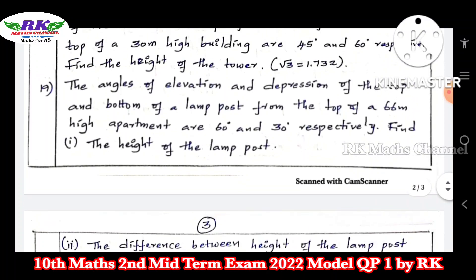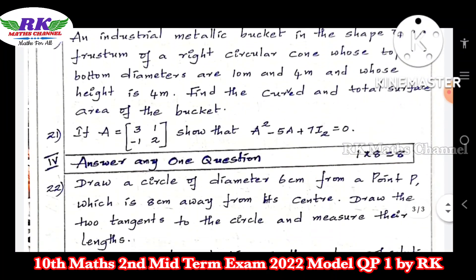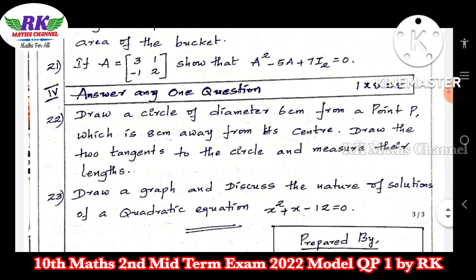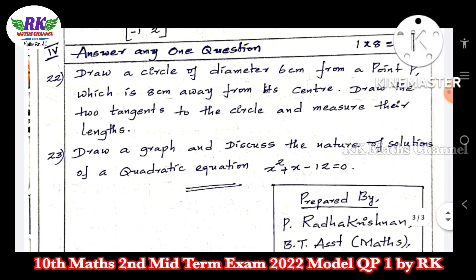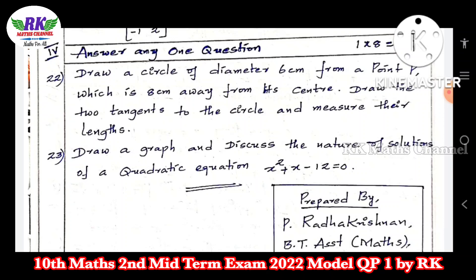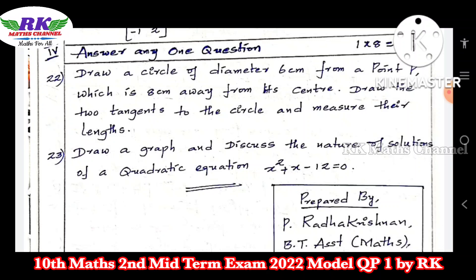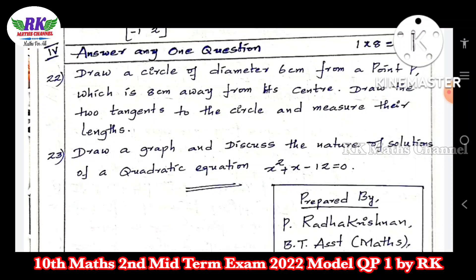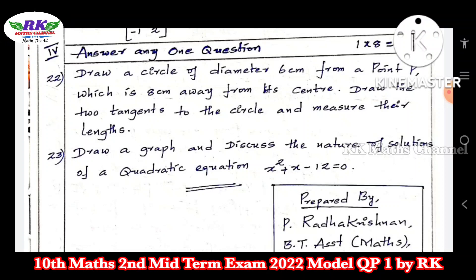From 7 questions you have to answer 5. The next part has graph and geometry — if you have 4 questions, pick 2; out of 100 marks that section is 16 marks, and for 50 marks it is 8 marks. Questions 22 and 23: answer any one — Q22 is construct a tangent from an exterior point, and Q23 is finding the nature of solutions of a quadratic equation.